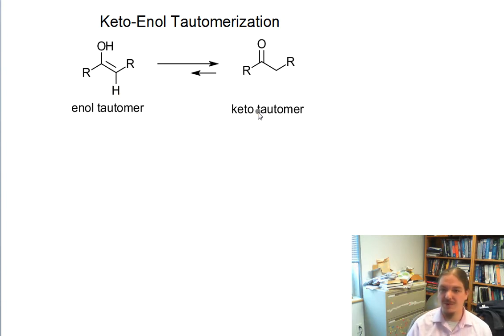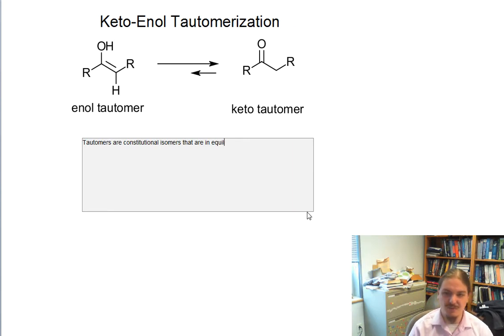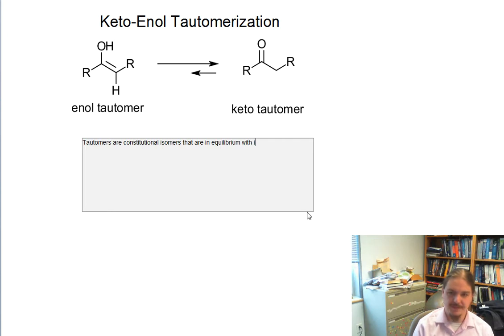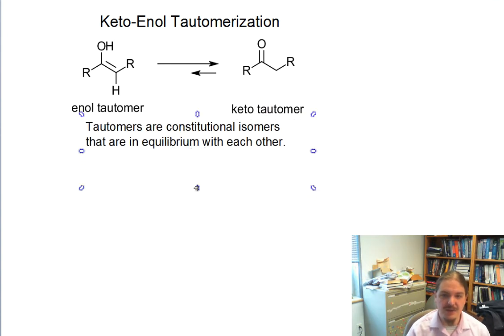Let's talk about what we mean by the word tautomer. Tautomers — like all '-mers' — we're actually referring to a relationship between two structures. You can't have a single enol tautomer; we're talking about the relationship. Tautomers are constitutional isomers that are in equilibrium with each other.